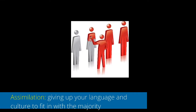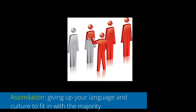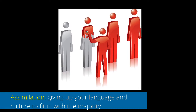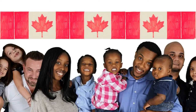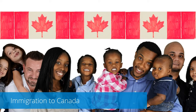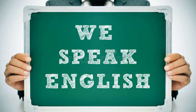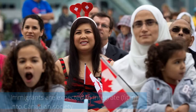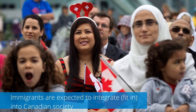Another challenge related to homogenization is assimilation — when people, usually from a minority, give up their language and culture to fit in with the majority in society. For example, when a family immigrates to Canada and doesn't speak English as their first language, members of the family, especially children, might stop speaking their native language and practicing their own culture, and only speak English and practice Canadian culture just to fit in.